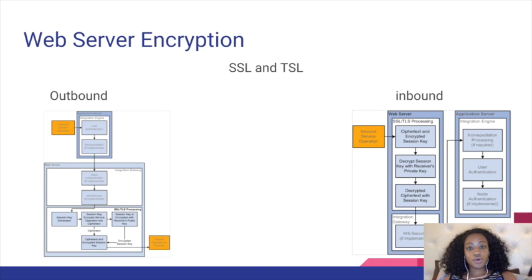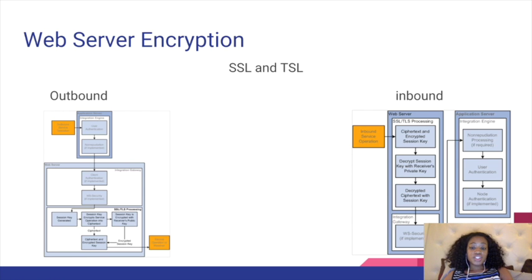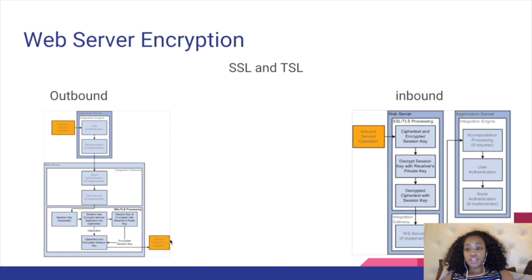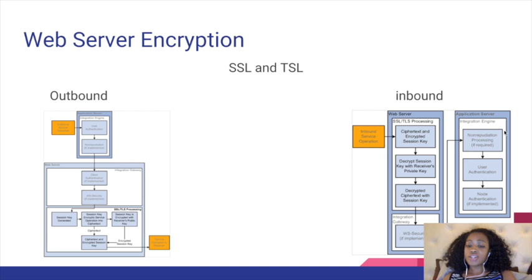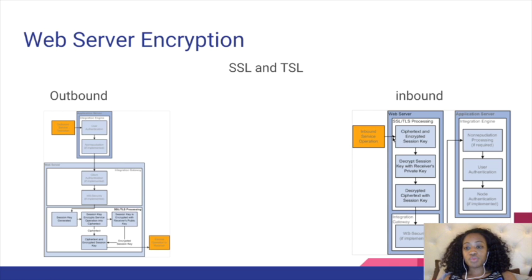Next is web server encryption. We have SSL and TLS, which use outbound and inbound processing. A key is generated consisting of a private key and a public key. The private key is placed in the web server key store, whereas the public key is placed in a digital certificate. For inbound encryption, the partner contacts using a secure HTTPS URL. In terms of key management, it is necessarily similar, but the actual processing is different.